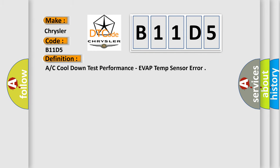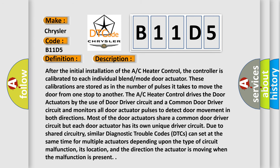The basic definition is: A or C cool-down test performance — a VAP temp sensor error. After the initial installation of the AC heater control, the controller is calibrated to each individual blend mode door actuator. These calibrations are stored as the number of pulses it takes to move the door from one stop to another. The AC heater control drives the door actuators using a door driver circuit and a common door driver circuit, and monitors all door actuator pulses to detect door movement in both directions. Most door actuators share a common driver circuit, but each has its own unique driver circuit. Similar DTCs can set simultaneously for multiple actuators depending on the type of circuit malfunction, its location, and the direction the actuator is moving when the malfunction is present.